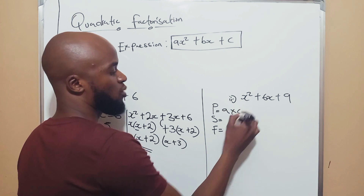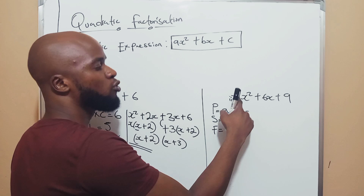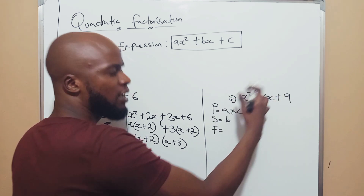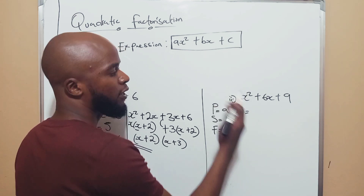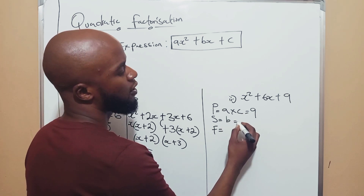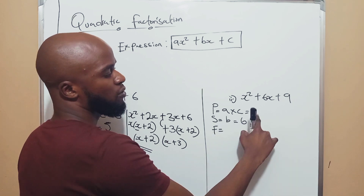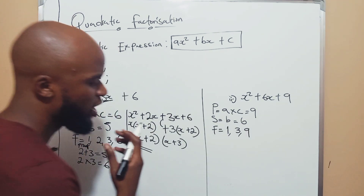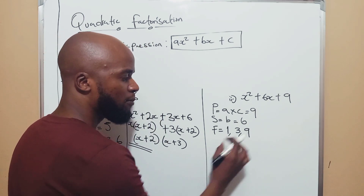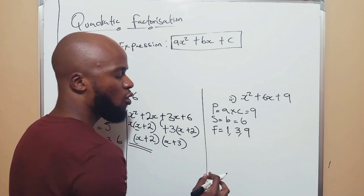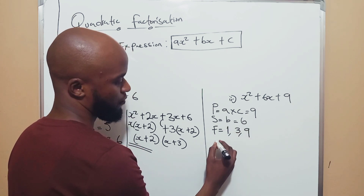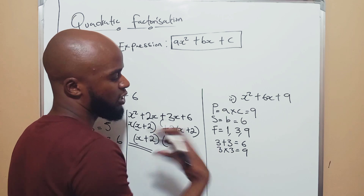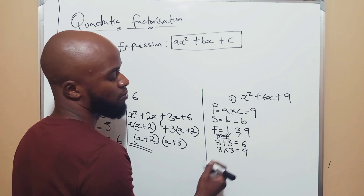The product is found by a times c. Here a is 1 — there's an invisible 1. So 1 times 9 is 9. And your b is 6, so your sum is 6. Factors of 9: you have 1, 3, and 9. Now ask: what two numbers, if we add or subtract them, give us 6? And when we multiply them, give us 9? I'll use 3 and 3. Proof: 3 plus 3 is 6, and 3 times 3 is 9. You can use the same variable. You can't just choose numbers without proof.